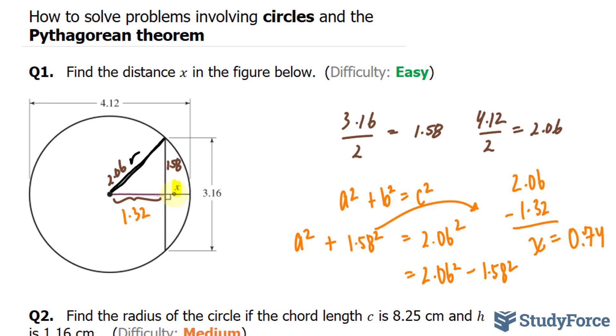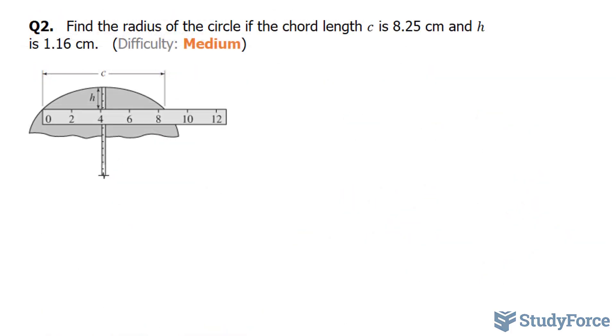Let's challenge ourselves with something a little more complicated. The question reads, find the radius of the circle if the chord length c is 8.25 centimeters, and the height from here to here is 1.16. So pretend we have a chord that spans the length from here all the way to here, and the radius is the distance from here to the center of the circle.